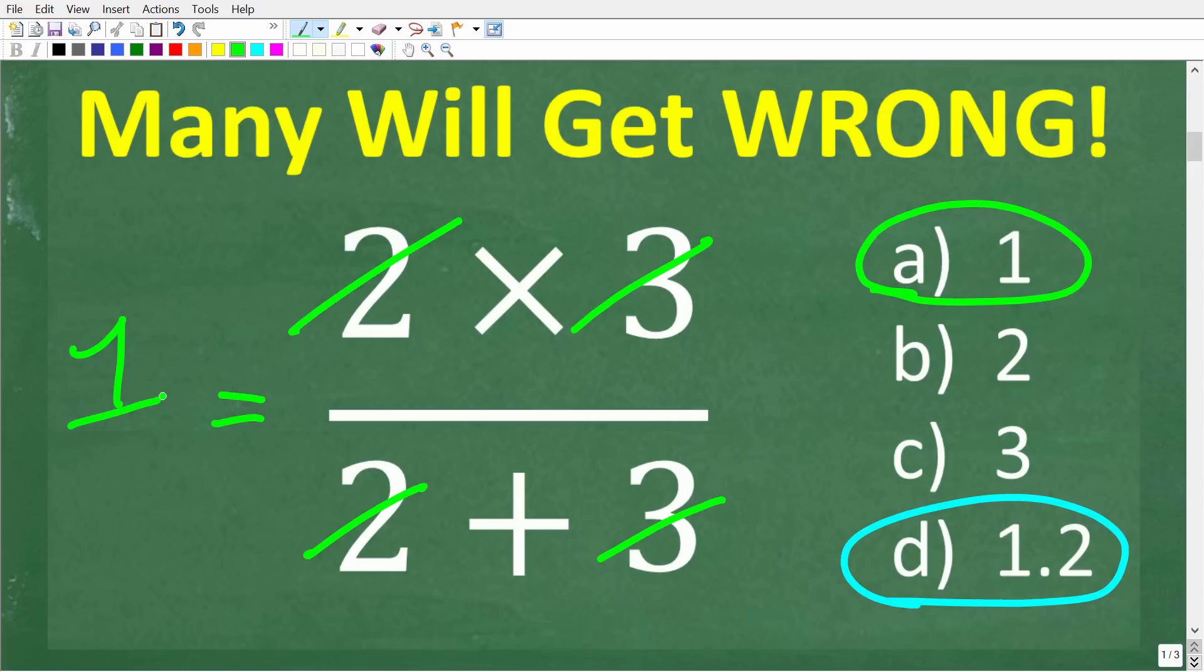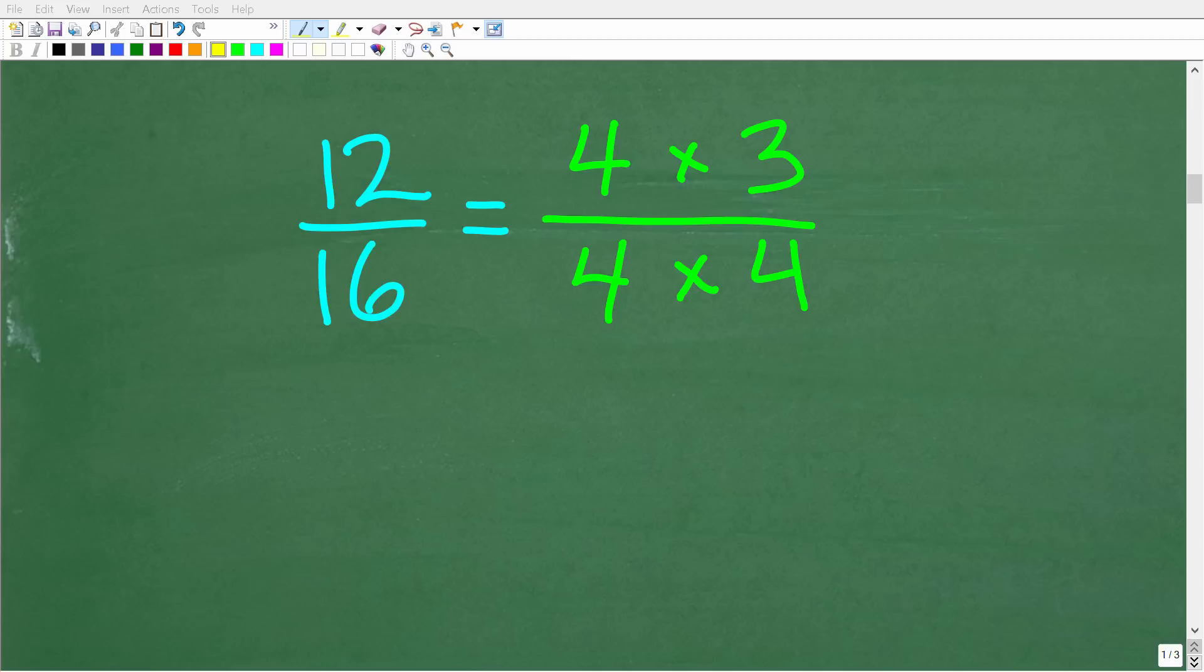So let's take a look at a few examples on exactly how this works. So really what we're talking about here is simplifying fractions. So let's take a look at this example right here. We have 12 over 16 and we know that 12 is equal to 4 times 3 and 16 is equal to 4 times 4.